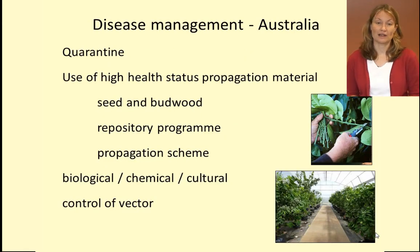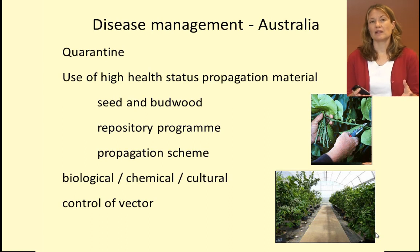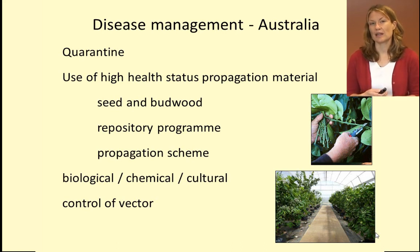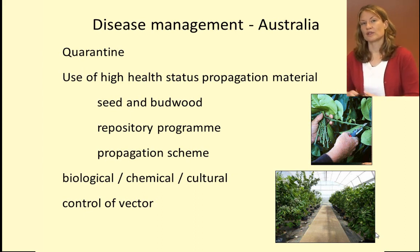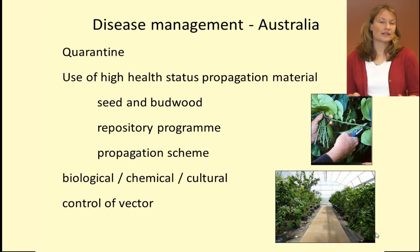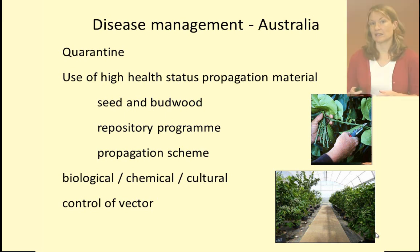Diseases are managed in Australia by quarantine — we try to keep the diseases out. We use high health status propagation material; that is, we have a repository program with mother trees that are tested and found to be free of these diseases. These trees supply seed and budwood so that nurseries can provide healthy nursery plants to citrus growers to plant in the orchard. Other diseases are also managed using biological, chemical and cultural controls. And for diseases that are spread by a vector — for example an insect vector — managing the insect vector will help to manage the disease.